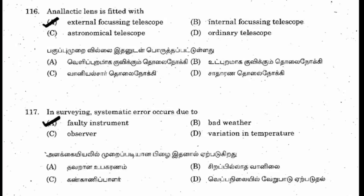Question 117: in surveying, systematic error occurs due to a faulty instrument. Observer errors fall under personal error, while bad weather and variation in temperature come under natural errors.